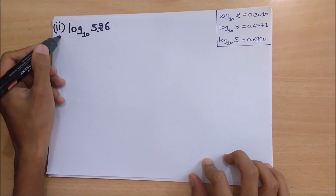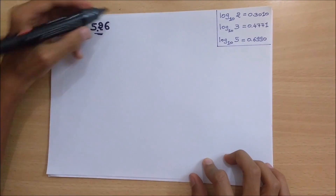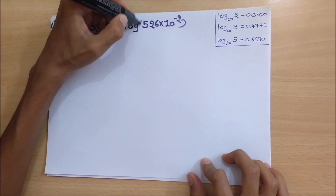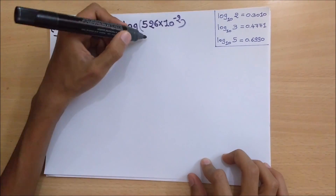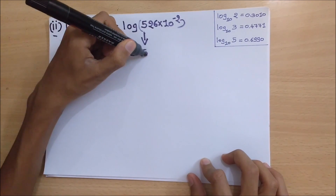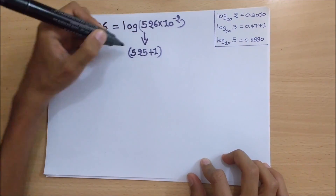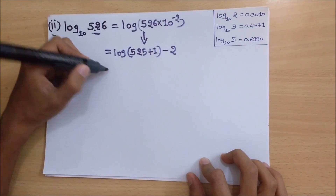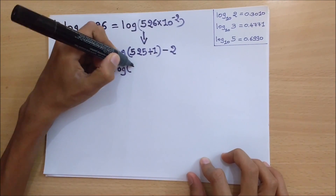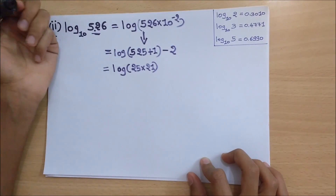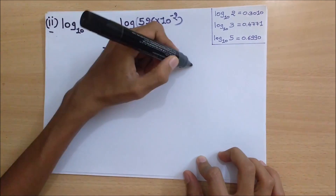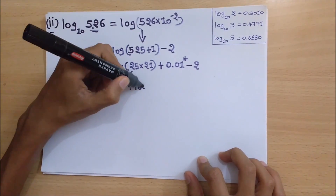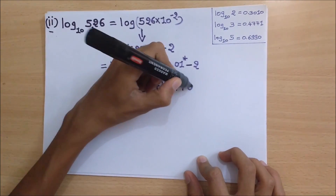Next is log of 5.26, which equals log of 526 into 10 raised to minus 2. Now we can write 526 as 525 plus 1, so the previous step equals log of 525 plus 1, minus 2. Again we can write 525 as log of 25 into 21, plus 0.01, minus 2 — here 0.01 is an estimated value. Again we can write the previous expression as 2 times log of 5, plus log of 3, plus log of 7, plus 0.01, minus 2.